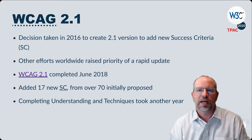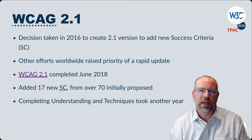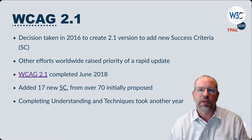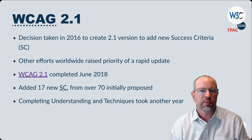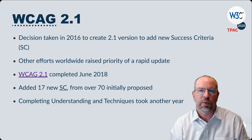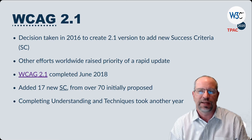We realized that there were still many needs of users that were not met, and in 2016 work began on creating version 2.1 to add new success criteria to the WCAG standards. The priority of this work was elevated because of other efforts worldwide, and work completed on WCAG 2.1 in June of 2018. 17 new success criteria were added from over 70 initially proposed, and an additional year was spent completing the understanding and techniques documents for these new success criteria.